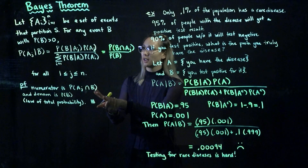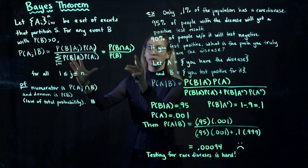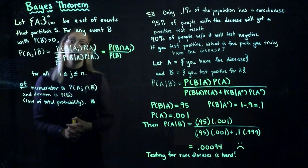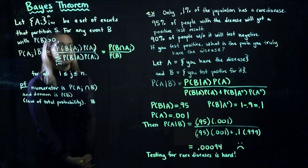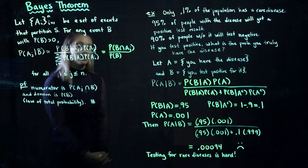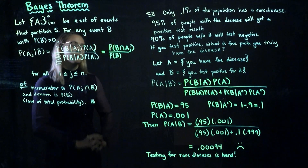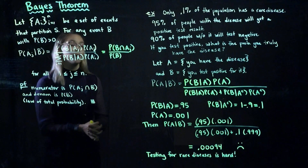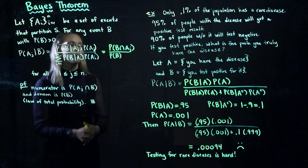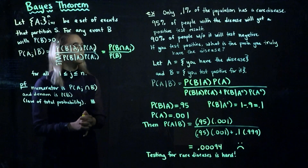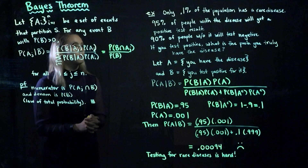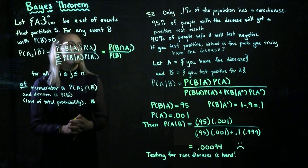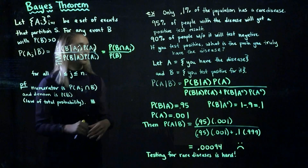Now that we understand how this theorem came about, let's use it to calculate some probabilities. Imagine a rare disease that only 0.1% of the population has. We have a test where 95% of people with the disease will get a positive test result. And if we have people without the disease, 90% of them will have a negative test result.